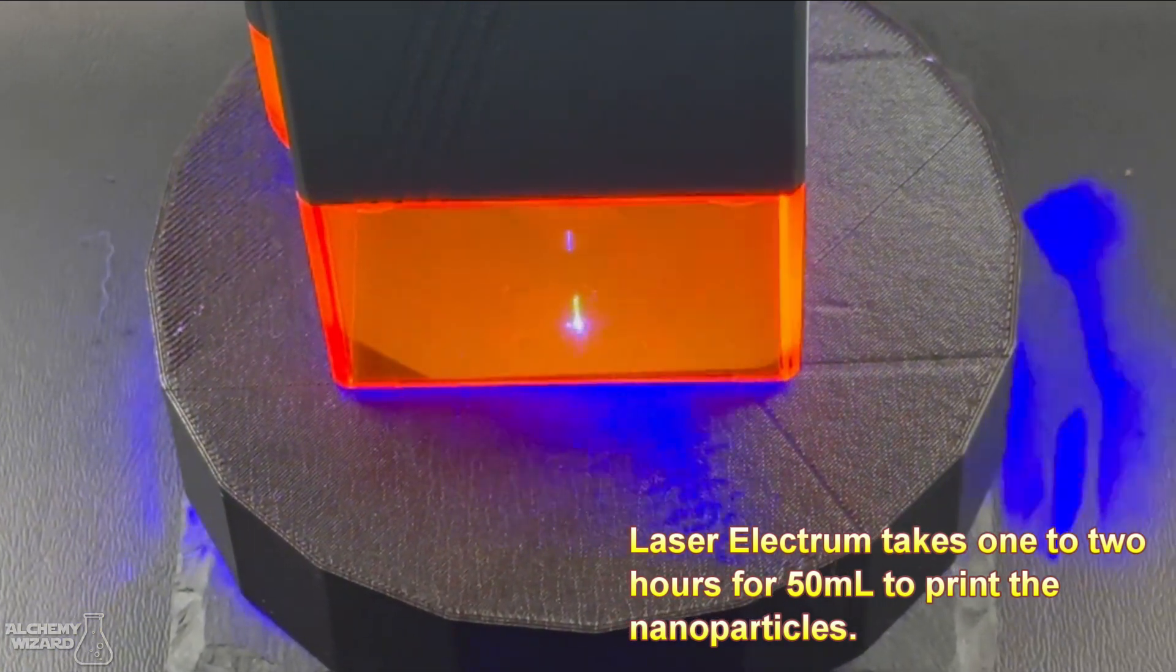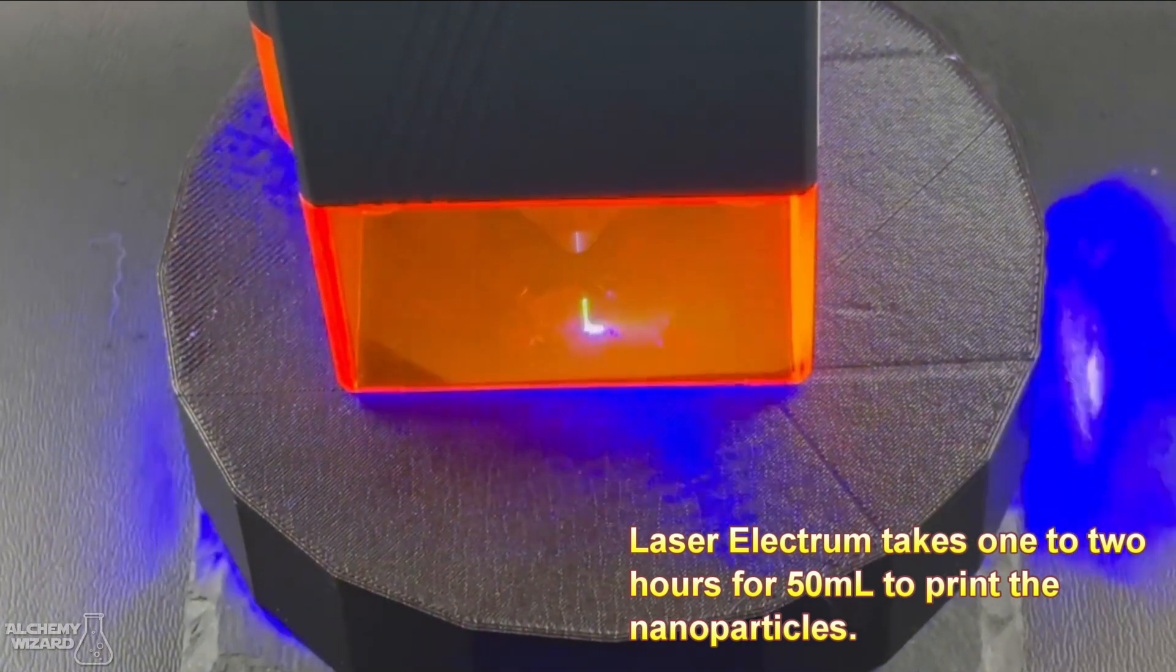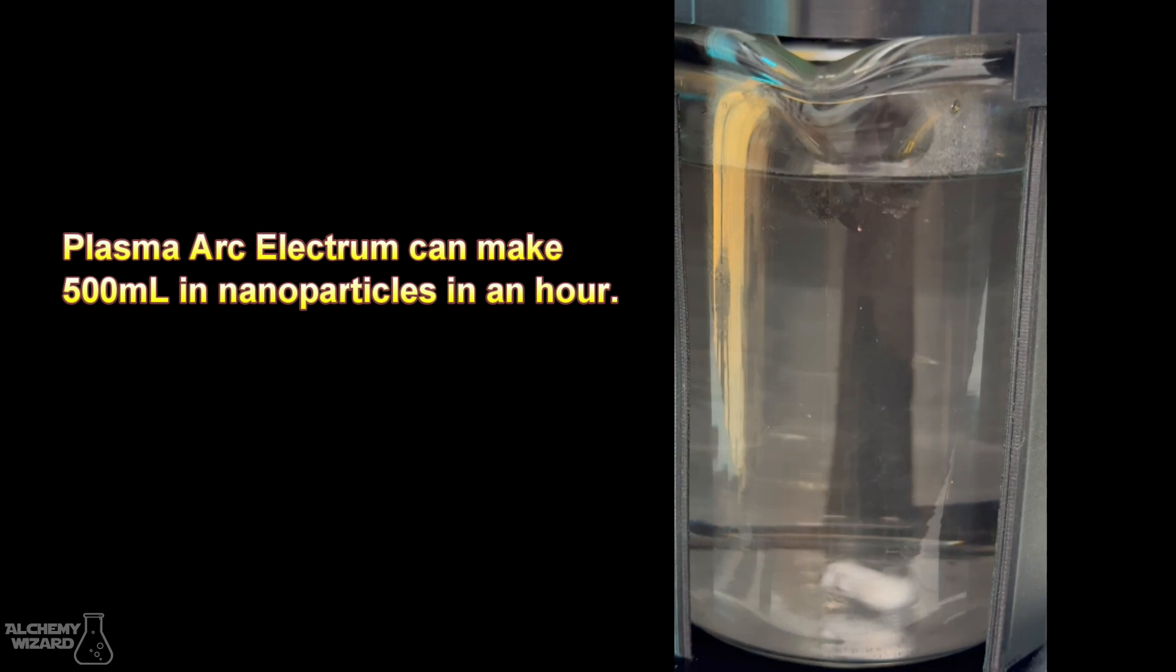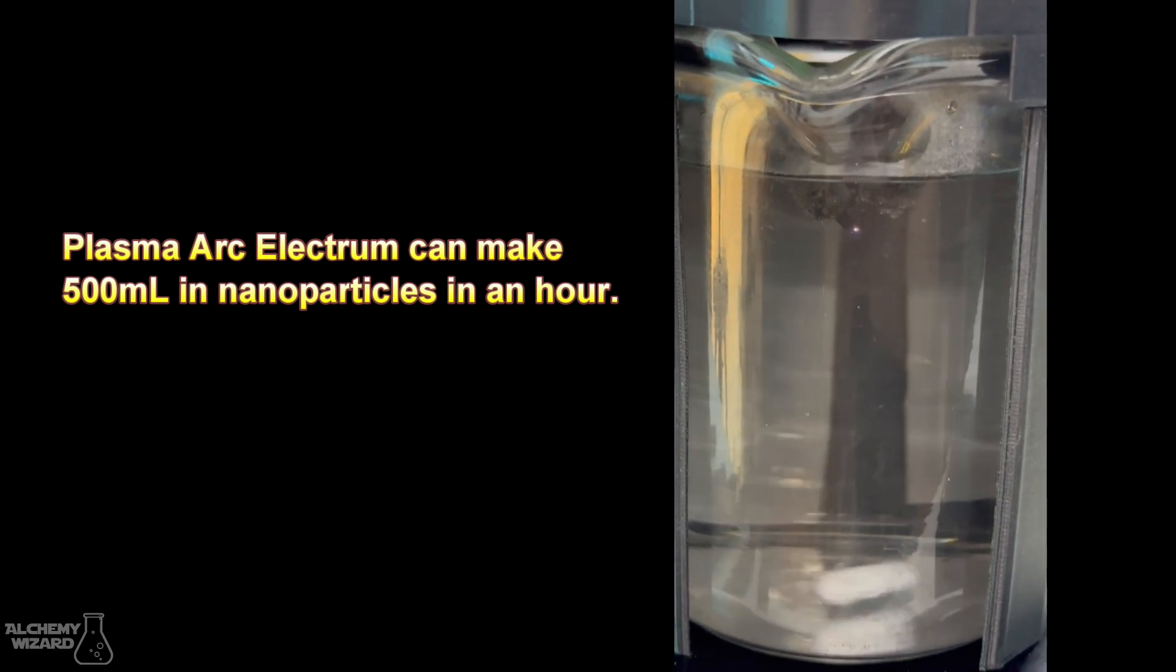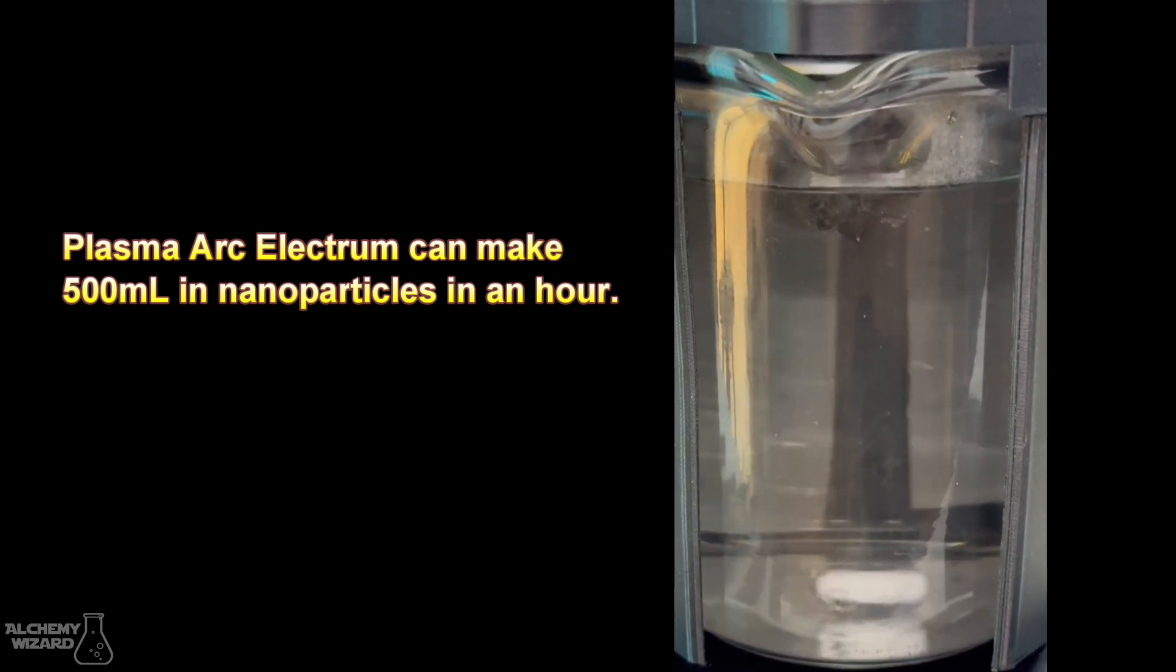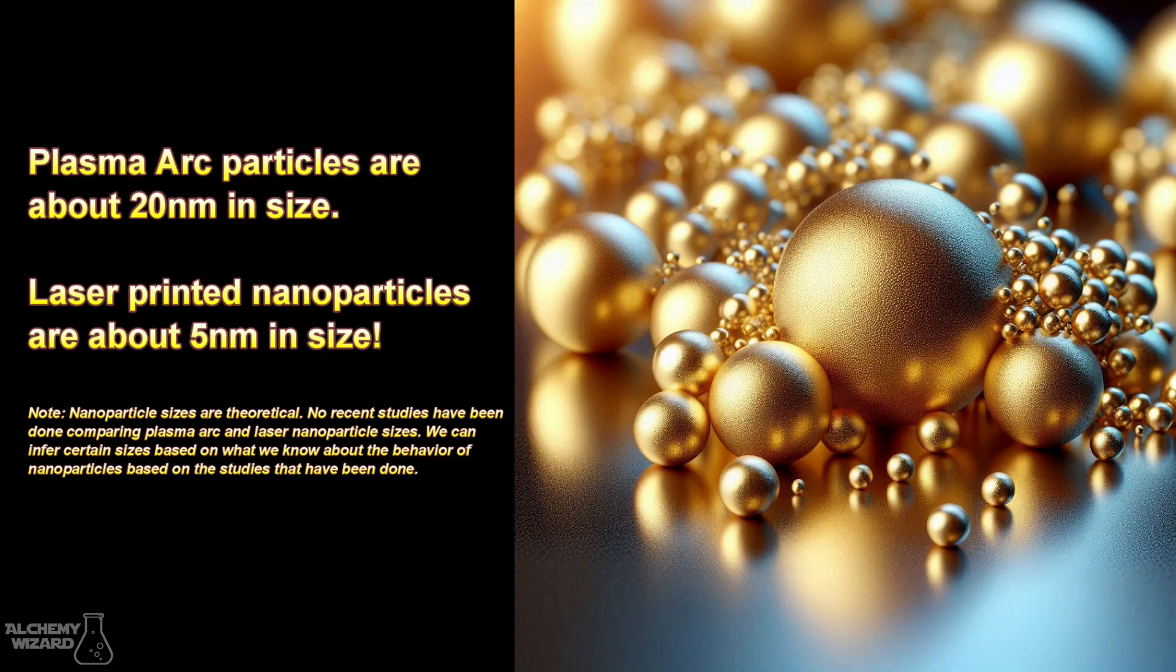The reason I'm doing it this way is because laser Electrum takes hours and hours to make because you're making a very small amount at a time. Naturally, I can cook this in under an hour—I can get 16 ounces of Electrum. Whether it's better or not, I'm not sure, because here we're talking about 20 nanometers in size, and when we do it with the laser, we're looking at five nanometers in size.